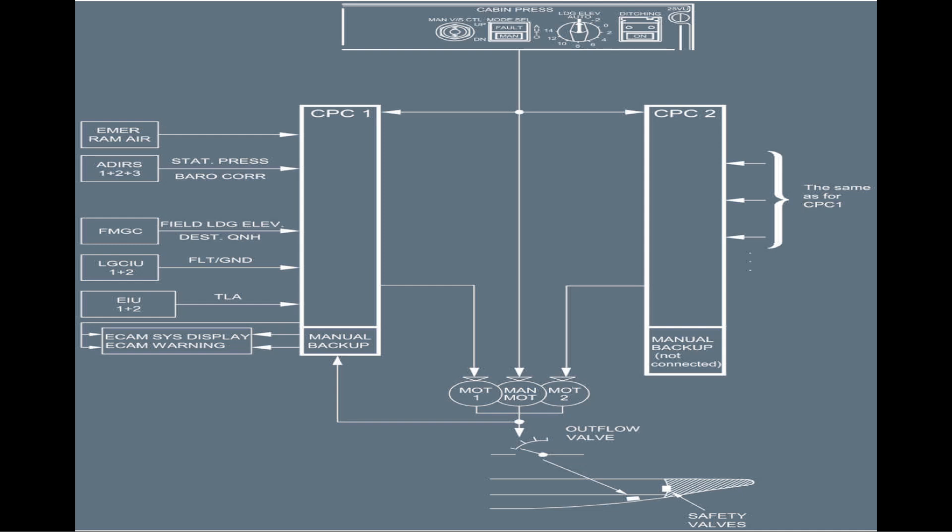Liegt der Delta P unter 1 PSI – also in Regionen um 10.000 bis 13.000 Fuß – würde das Outflow Valve sich um 50% öffnen und den Druckausgleich stattfinden lassen. Der RAM Air Switch ist insbesondere dafür gedacht, wenn wir ein Pack verloren haben oder Rauch in der Kabine haben, weil in dem Fall Frischluft benötigt wird – durch die Mixing Unit wird alles vermischt, und das ist nicht gut.